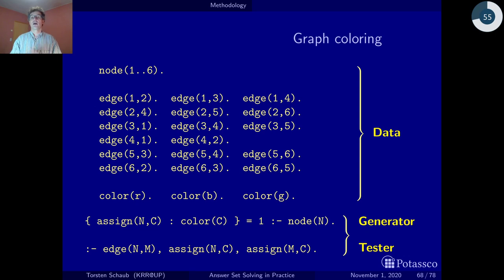and in the problem encoding you have a generator and a tester. The generator generates a set of instances of the binary predicate assign, and from there you can say okay, I have such a set of assignments and now I can analyze them.